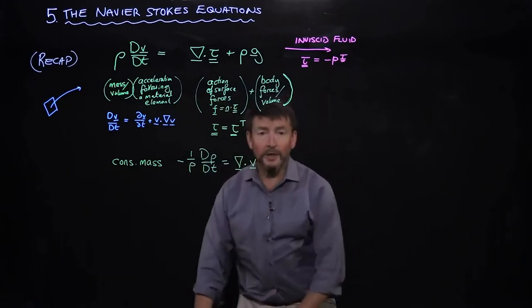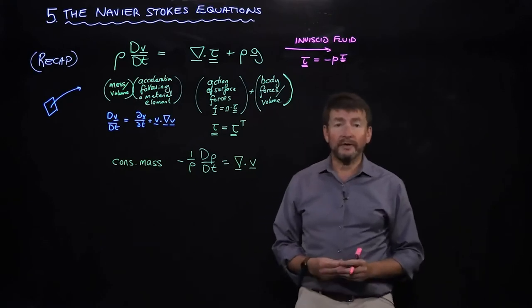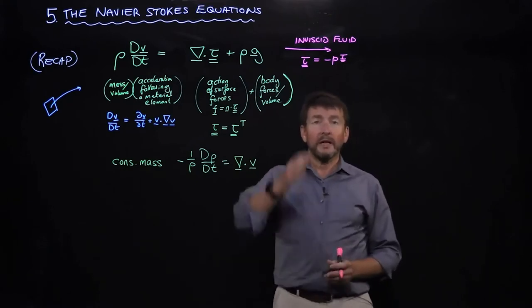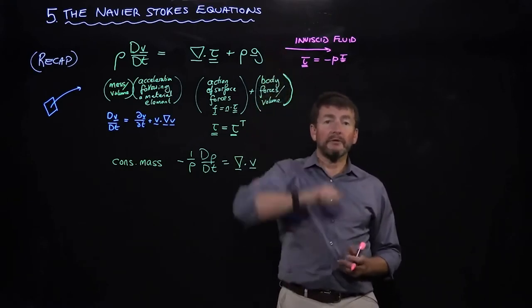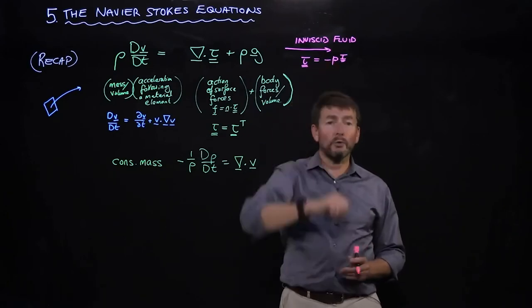What we did in the first module was to say we're going to neglect viscous stresses. We introduced the idea of an inviscid fluid where the only stress was coming from the isotropic inward pointing pressure, which we call p.